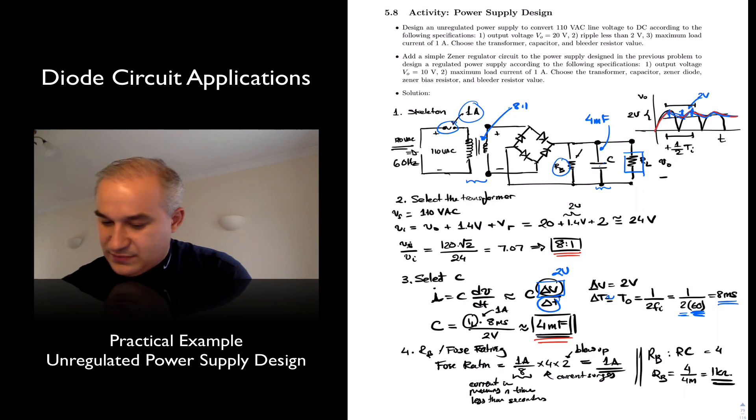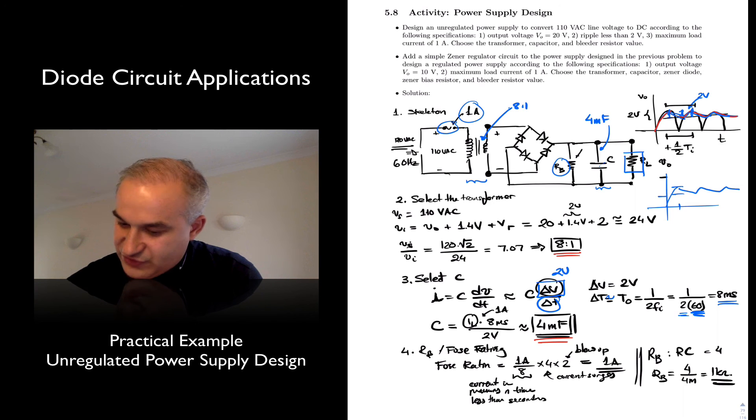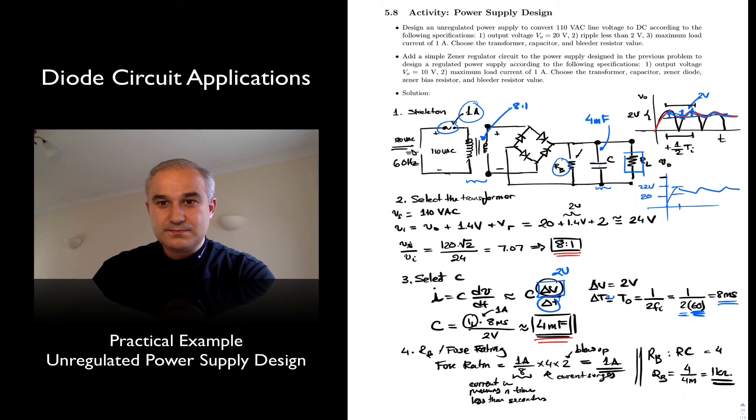So this is an unregulated supply and so we should get something like this after the initial transient where the lowest voltage that we will have is 20 volts and this can go all the way to 22 volts. Now in the second part we can make this better by adding a regulator, even a simple regulator like a Zener improves the circuit.